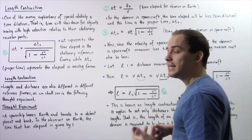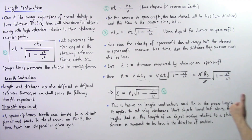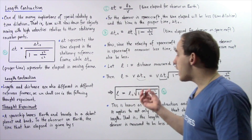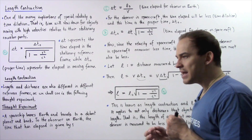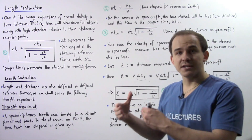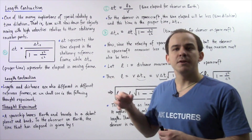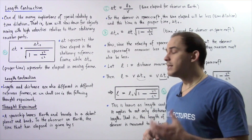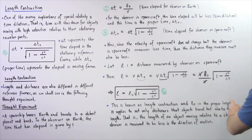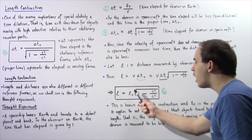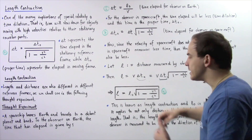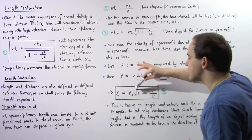Equation four is known as the length contraction equation. L naught is the proper length — the length measured by the stationary observer on Earth — while L is the length measured by the observer inside the moving spacecraft. Because the square root term is always less than one, L is always less than the proper length L naught.